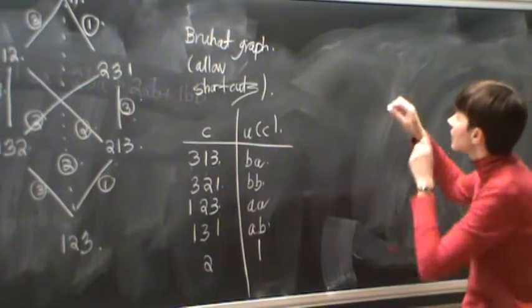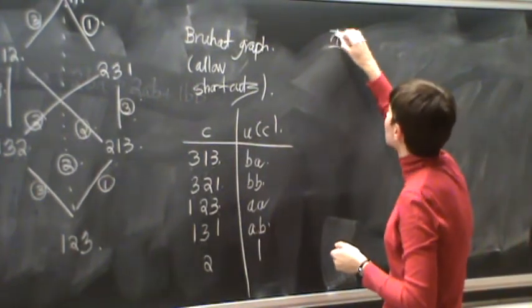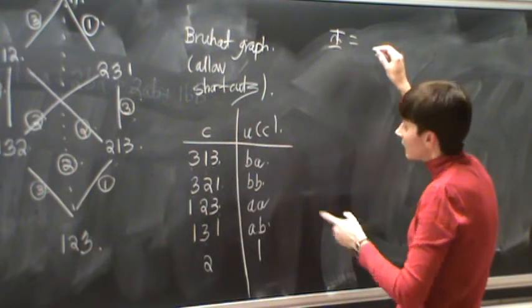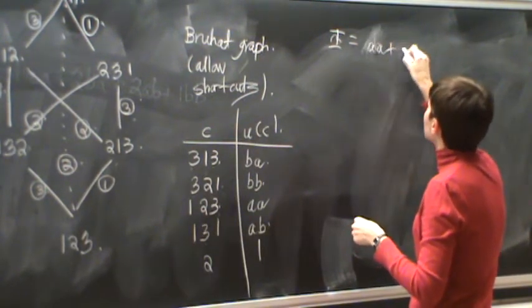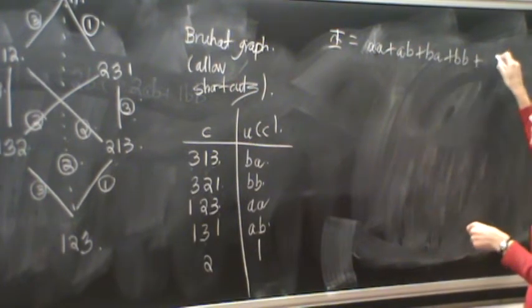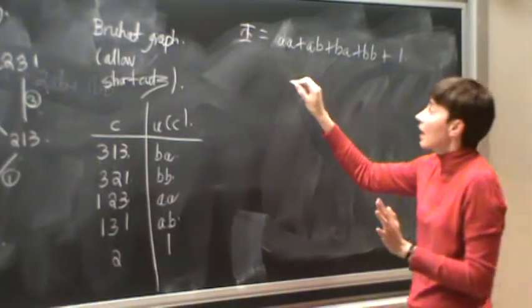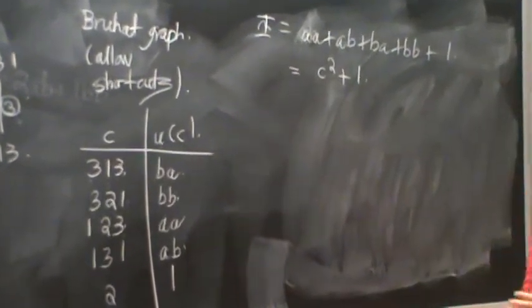So here, if we define this AD index, we end up getting AB. Well let's write this out: AA plus AB plus BA plus BB plus 1, and again you say, ah, C squared plus 1, right? This would be the natural thing.